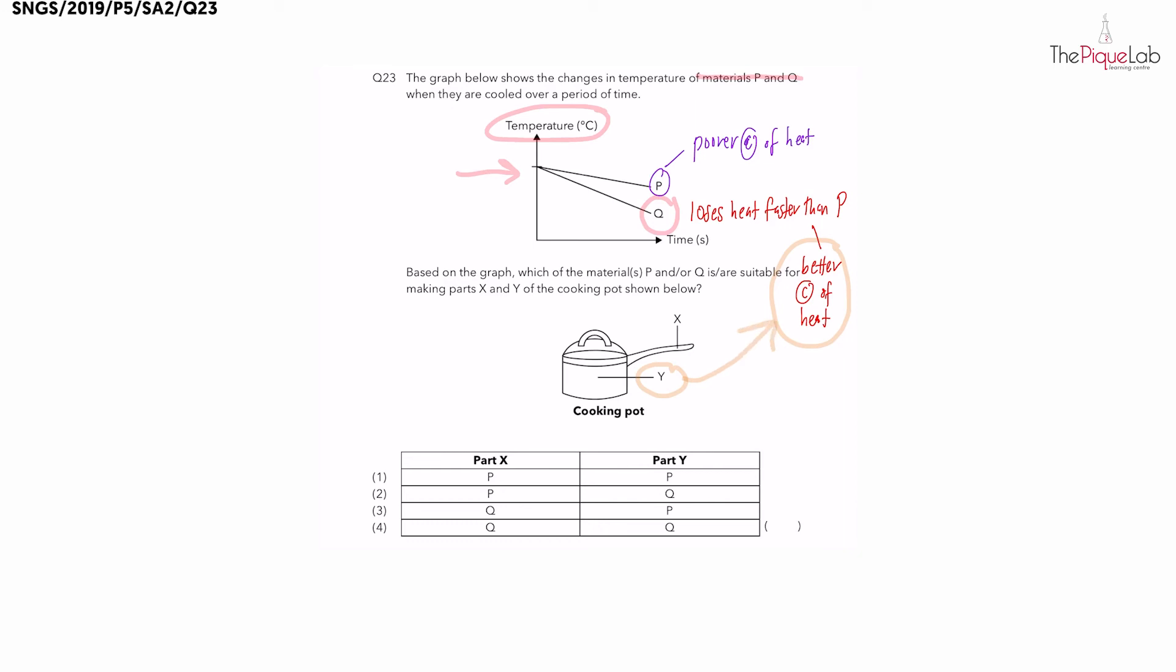Now what about the handle? The handle itself allows us to pick up the pot without burning our hands. So what kind of material should the handle be made of? The handle should be made out of the poorer conductor of heat so that the handle gains heat slower from the heat source. So the handle should be made out of material P.